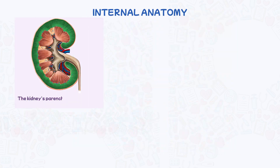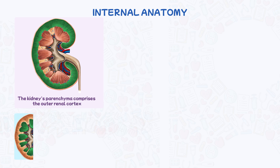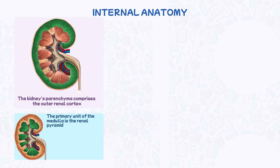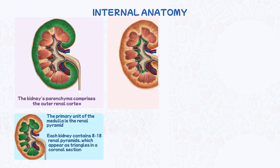The primary unit of the medulla is the renal pyramid. Each kidney contains 8 to 18 renal pyramids, which appear as triangles in a coronal section, with their bases facing the cortex and their apices pointing toward the hilum.